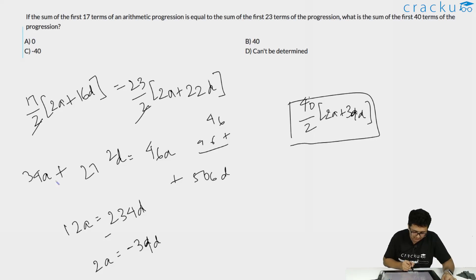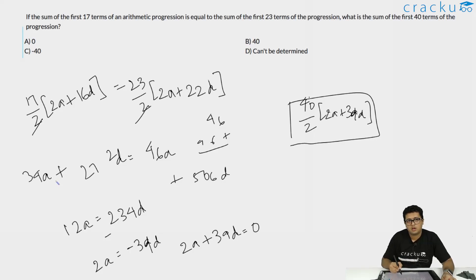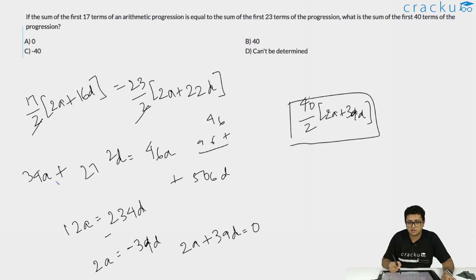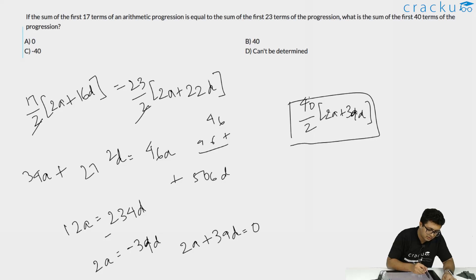Rearranging gives 2a + 39d = 0. Substituting this into the sum of 40 terms formula: 40/2 · (2a + 39d) = 20 · 0 = 0. The answer is 0.